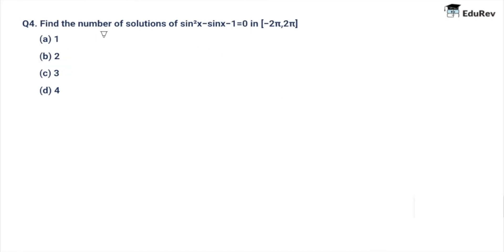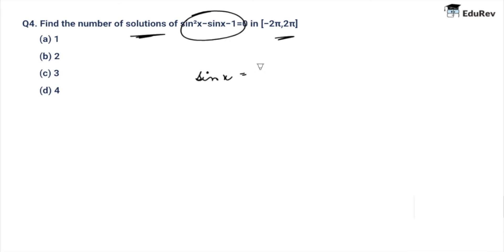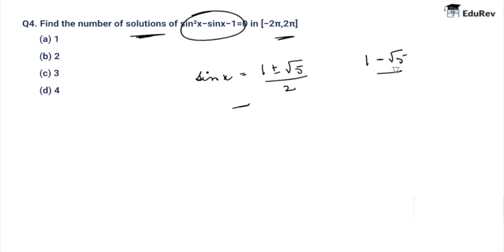The next question asks us to find the number of solutions of sin²x − sin x − 1 = 0. Using the quadratic formula, sin x = (1 ± √5) / 2. Now (1 + √5) / 2 is greater than 1, which is not possible for sine. So sin x = (1 − √5) / 2, which is the valid value since we cannot take the positive root.